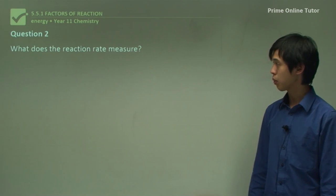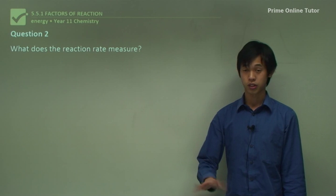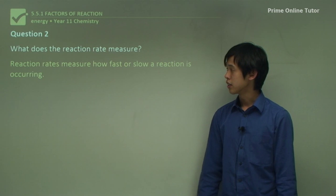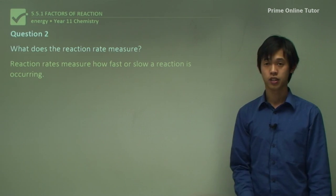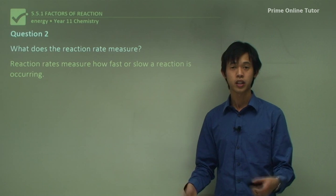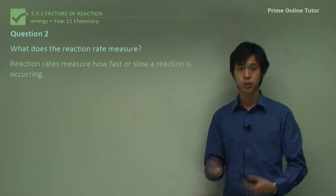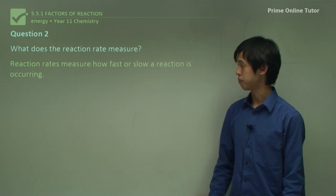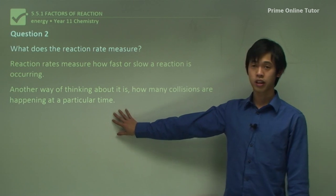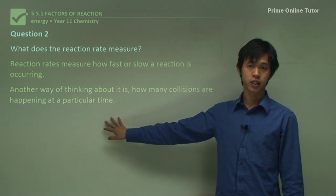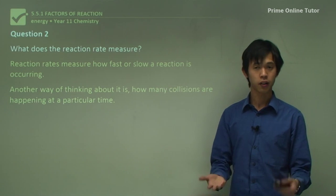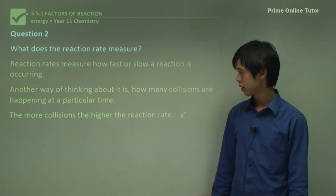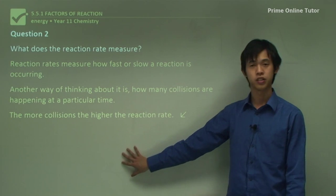Question two: what does the reaction rate measure? Reaction rates measure how fast or slow a reaction is occurring. A high reaction rate means you're consuming a lot of chemicals very quickly; a slow rate means you're not. We can also think of it as a measure of how many collisions are happening at a particular time — many collisions equals a high reaction rate, few collisions is a low reaction rate.